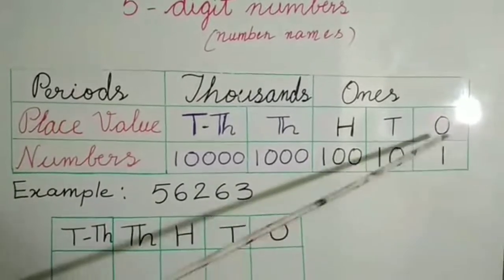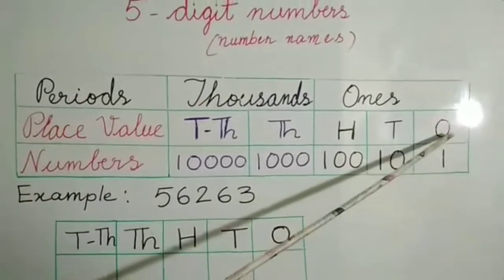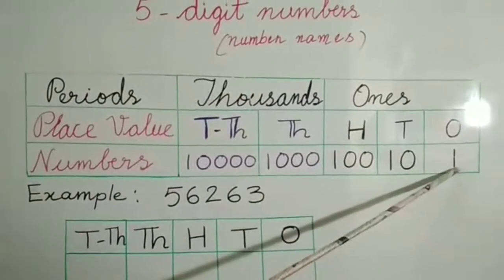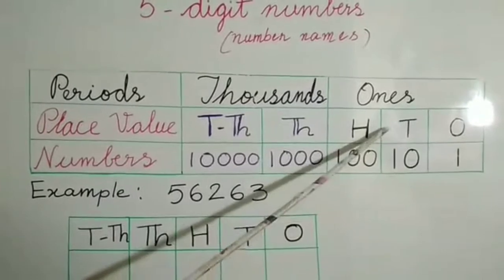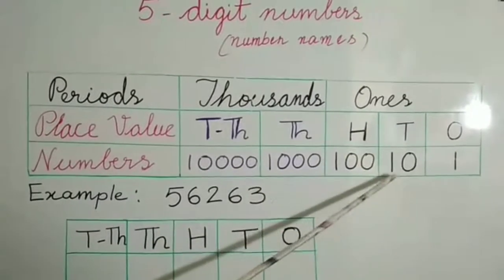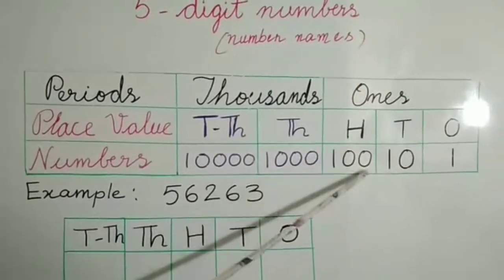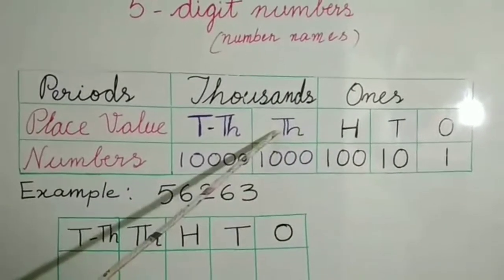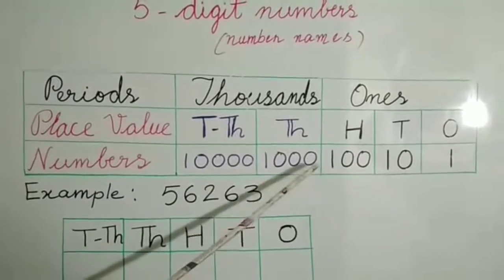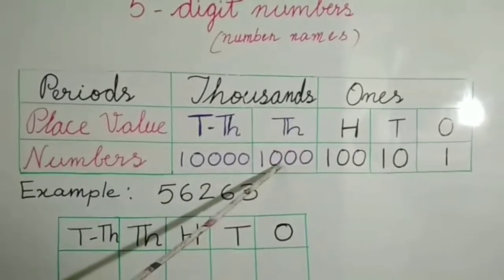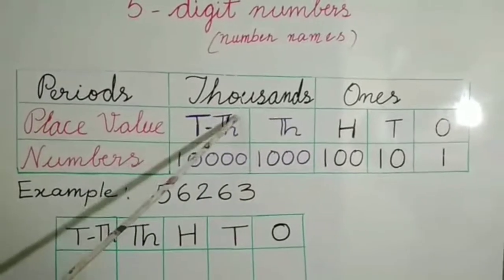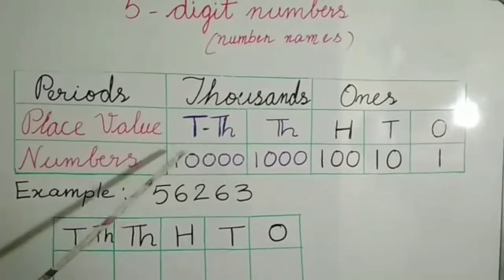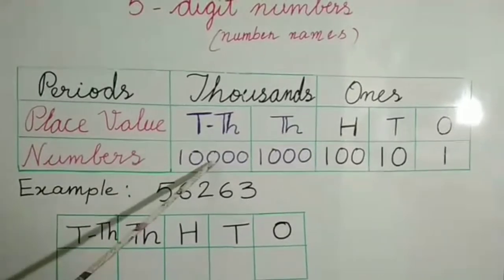Now let us see: ones is a one-digit number, tens is two digits, hundreds is three digits, thousands is four digits, and ten thousands — one, two, three, four, five — is a five-digit number.